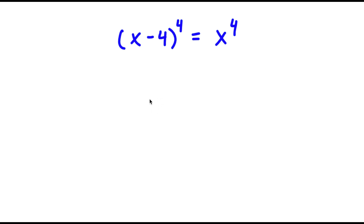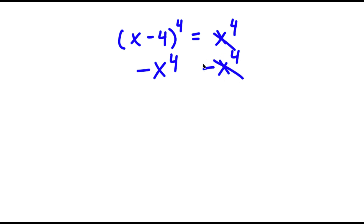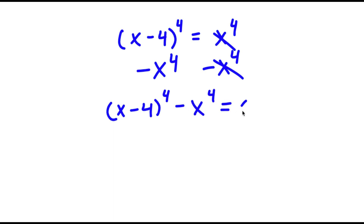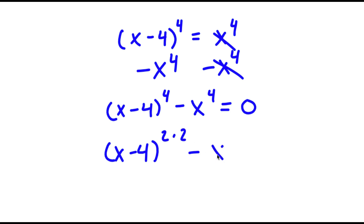In this problem, I have x minus 4 to the power of 4 is equal to x to the power of 4. To solve this, I'm going to first start by subtracting x to the power of 4 on both sides. So then these two cancel out, and now I have x minus 4 to the power of 4 minus x to the power of 4 is equal to 0. Now I'm going to rewrite this as x minus 4 to the power of 2 times 2 minus x squared times 2 is equal to 0.